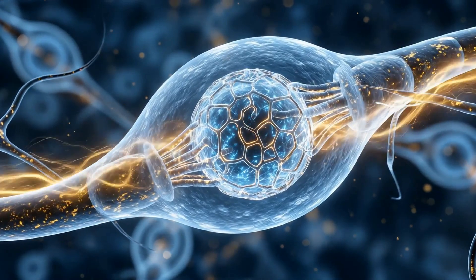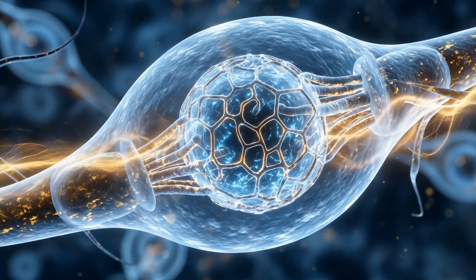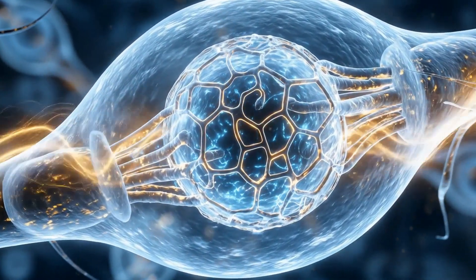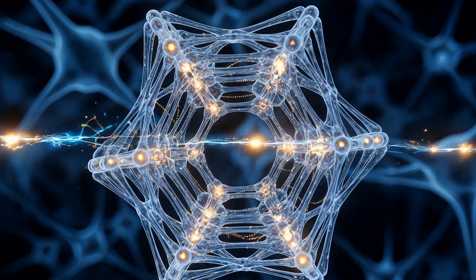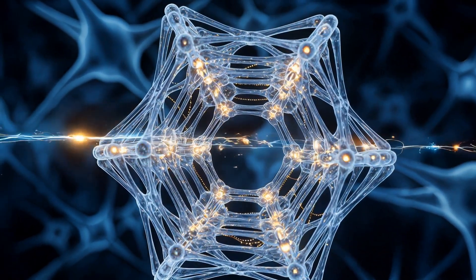Inside your neurons are structures called microtubules. They are lattices of qubits, each one a tiny light clock ticking in angles, not in time. Each tick is a projection of reality.